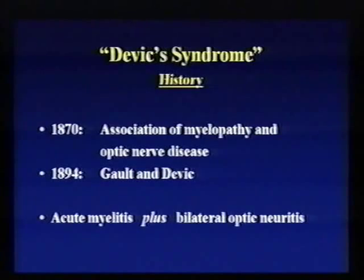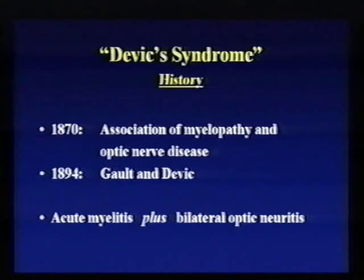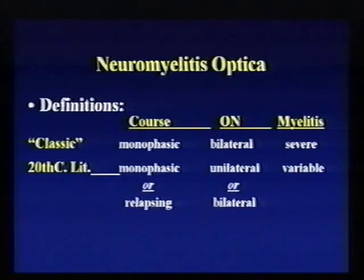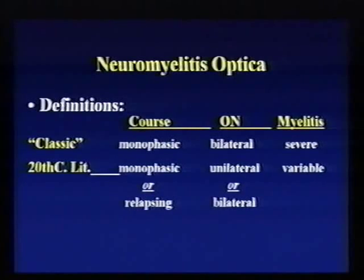Devic's syndrome is named after the neurologist Devic, who, along with one of his students, Francis Galt, summarized a number of cases. Just over 100 years ago, they described the association of transverse myelitis — an acute event — with bilateral optic neuritis affecting each eye. If you pick up a neurology textbook today, people still write that Devic's disease, or neuromyelitis optica, is a monophasic disease consisting of bilateral optic neuritis and a severe episode of myelitis — and authors usually emphasize that it's monophasic.